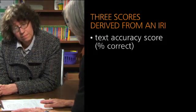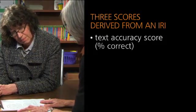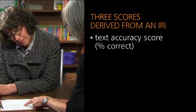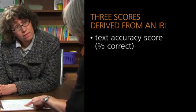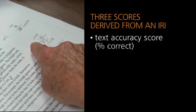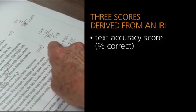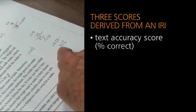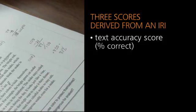One of the scores we can get from an IRI is the text accuracy score, which we generally calculate as a percent correct. We do that by taking the number of errors they made and subtracting that from the total number of words read, then converting that to a percent correct score.